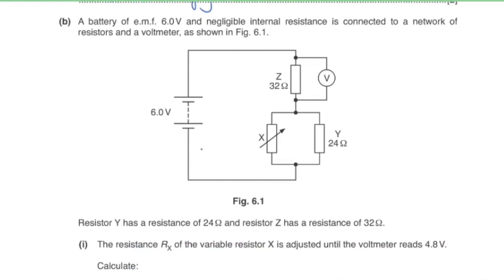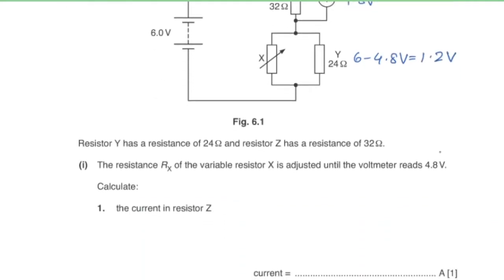Part b: a battery of EMF 6 V and negligible internal resistance is connected to resistors Y (24 Ω) and Z (32 Ω) and a voltmeter. The voltmeter reads 4.8 V, so the voltage across Z is 4.8 V and across X is 1.2 V. Current in Z = 4.8 / 32 = 0.15 amperes.